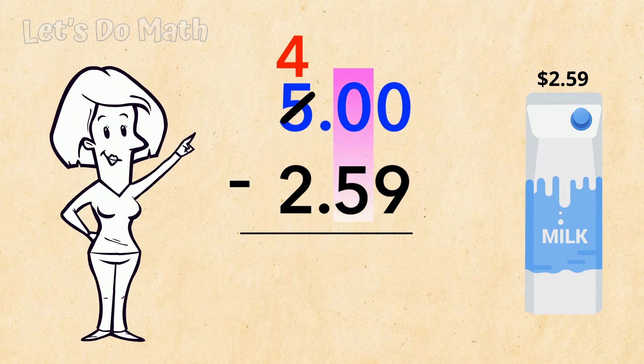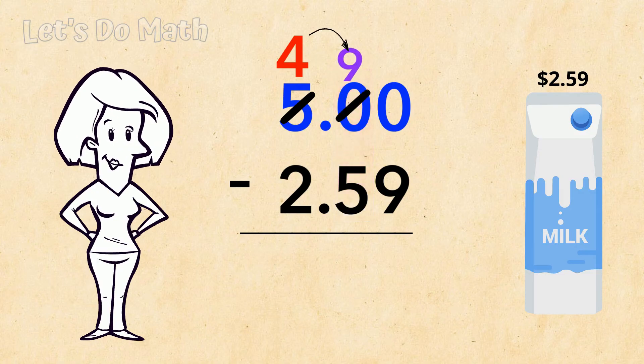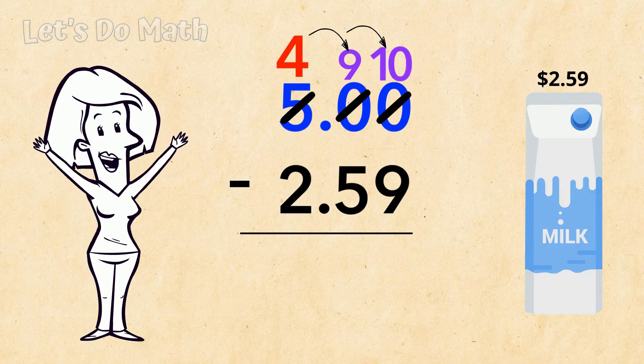We just have one column that we hopped over, so on the way back we drop off a 9, and then there's the 10 I've borrowed.